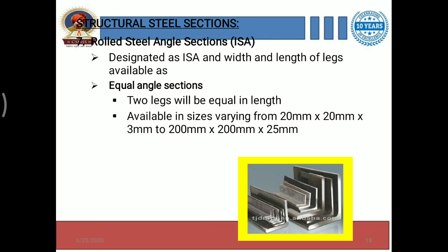Let's start the remaining structural steel sections one by one. We have already seen six different structural steel sections in previous videos. Now, there is another very important structural steel section: rolled steel angle sections, ISA — Indian Standard Angles. These are designated as ISA with the width and length of legs available in standard forms, in different sizes according to Indian Standard Angles.